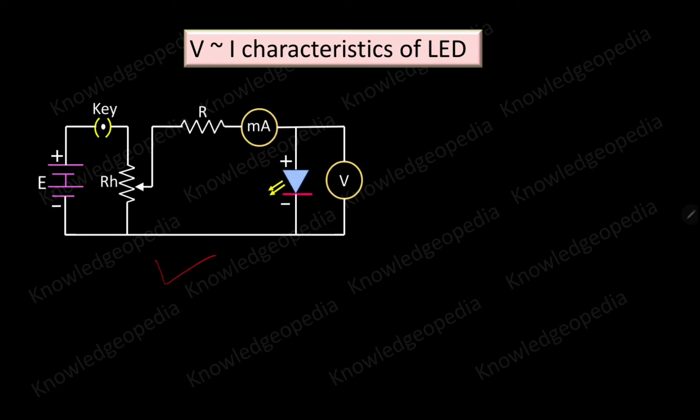LED we know is nothing but a specially designed p-n junction diode, and hence to study the V-I characteristics of an LED, the circuit diagram which we need to consider is same as the circuit diagram for studying the V-I characteristics of simple p-n junction diode. This is the circuit diagram for studying the V-I characteristics of an LED. Here this one is the LED, this blue side is the p-side and this red one is n-side.